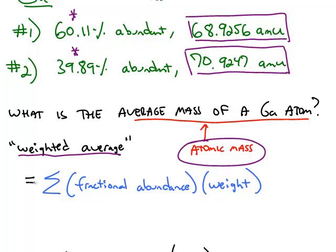The weighted average is given by the sum of the fractional abundance, the fractional chance of selecting one of these two isotopes, times the weight of each one of those isotopes.